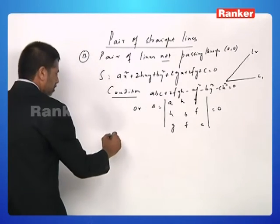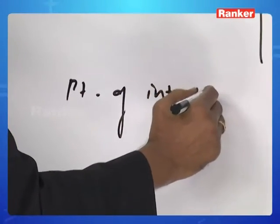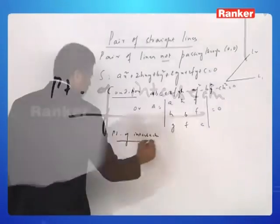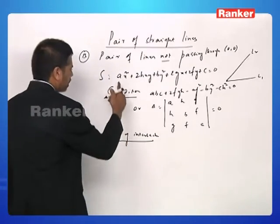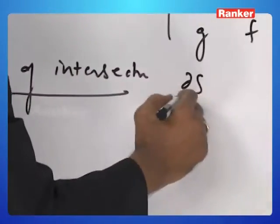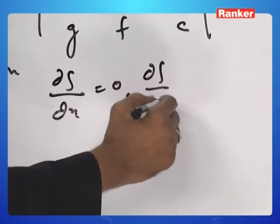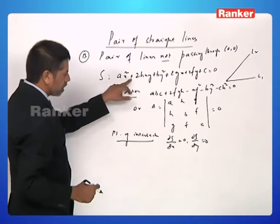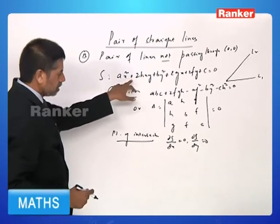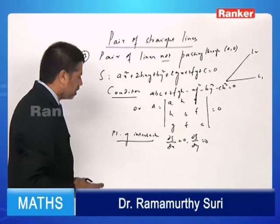Then the point of intersection of these two lines is given by a simple technique. You take dS by dx equals 0, dS by dy equals 0. That is, differentiate this partial with respect to x, then partial with respect to y, and then solve that. You will get the point of intersection.